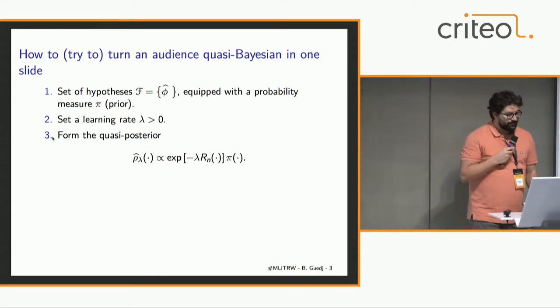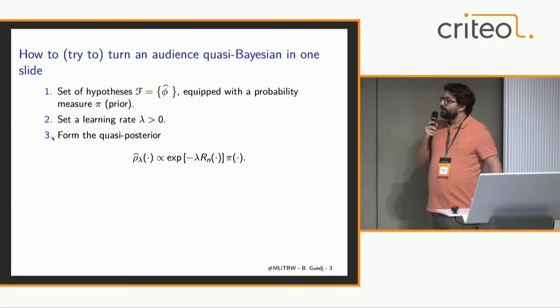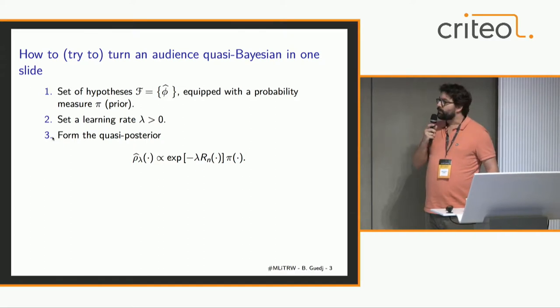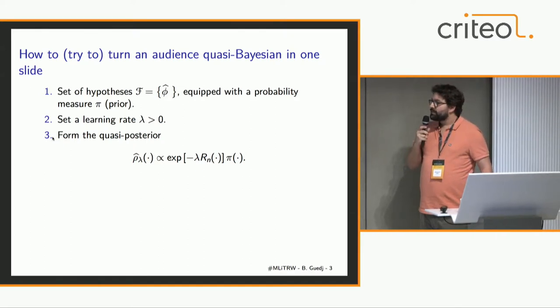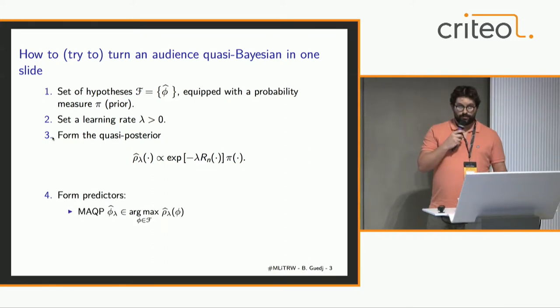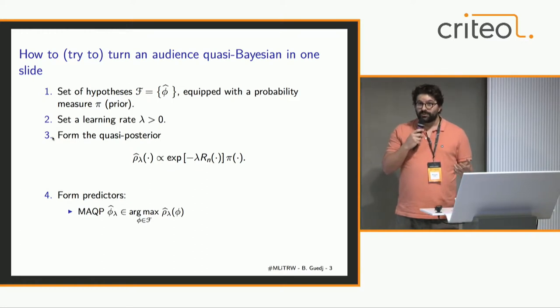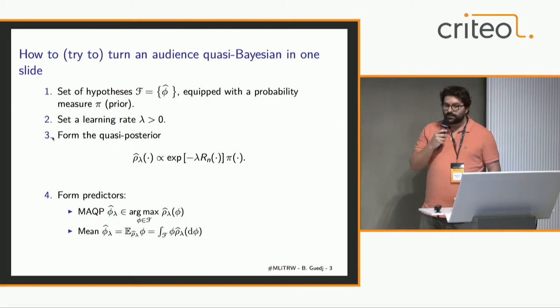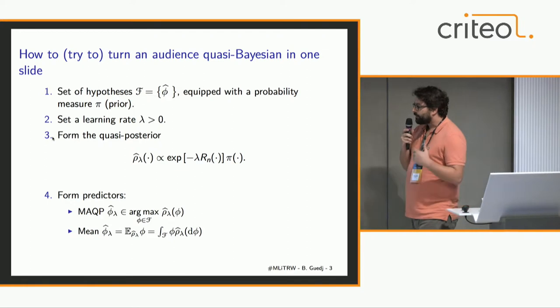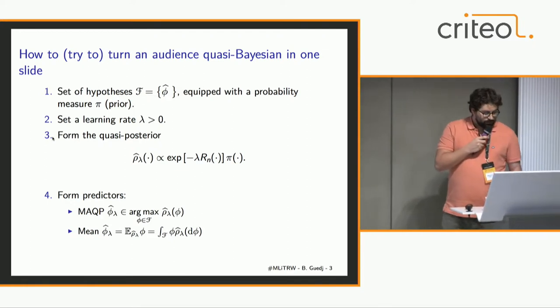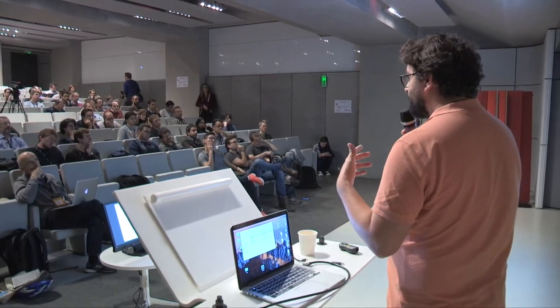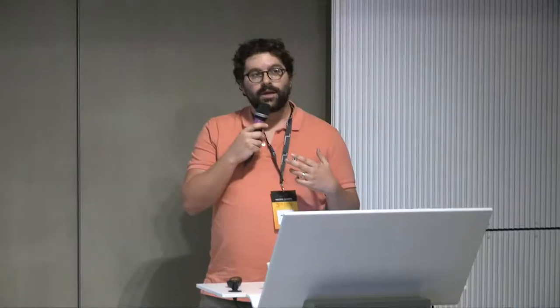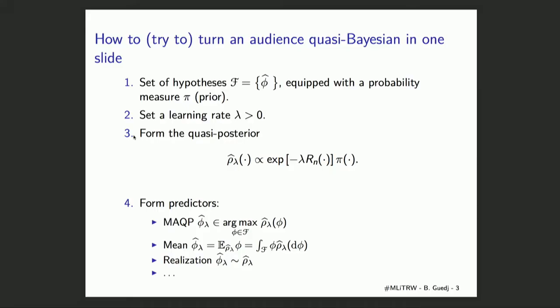It's a very natural idea. And then from this quasi-posterior — also known as the Gibbs posterior, some of you might know it under this alias — you would typically form different predictors. These could be, for example, the maximum a posteriori, or the maximum a quasi-posteriori, since we have no proper posterior. You could also look at the mean, the expectation of this distribution, or a random realization of this distribution, and so on. The crux is that the central object is just this quasi-posterior, and then you can derive a lot of results on estimators obtained through it.